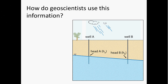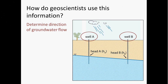So how do geoscientists use Darcy's Law? Essentially, you can think of wells as serving the same role as those manometers — we can go out and measure the elevation of water in a well, and that tells us the hydraulic head where that well is open in an aquifer. We can use these measurements to help determine what direction groundwater is flowing. In this illustration, we would conclude that groundwater is flowing from left to right toward well B because hydraulic head decreases in that direction — remember, groundwater always flows from high head to low head.